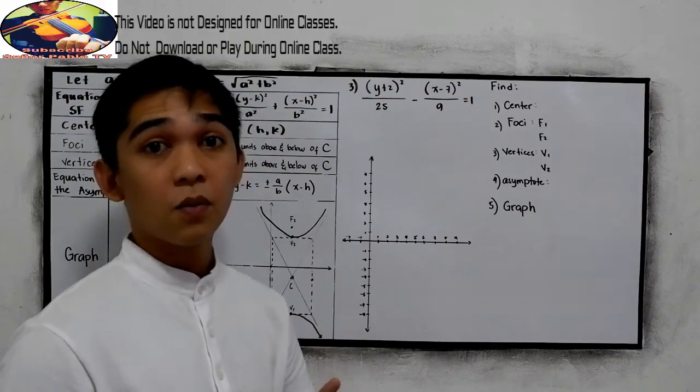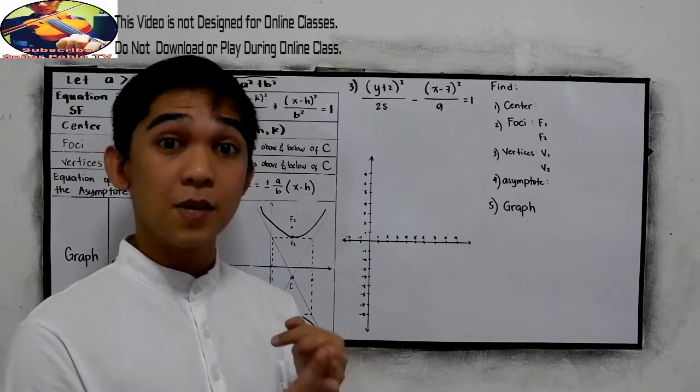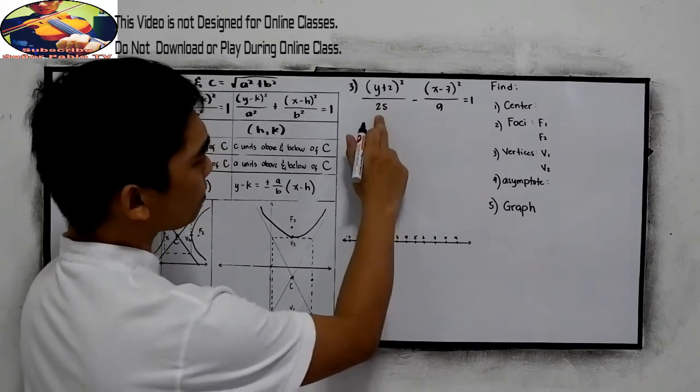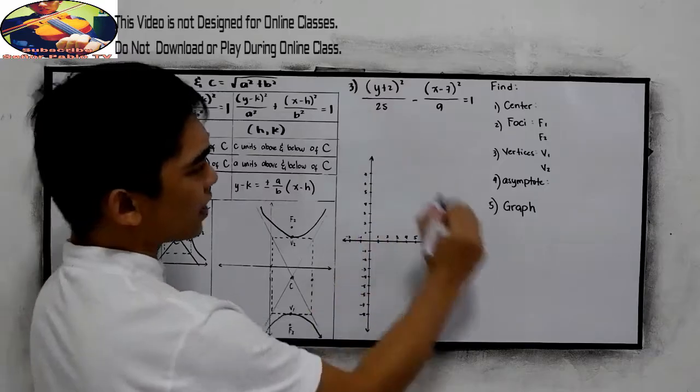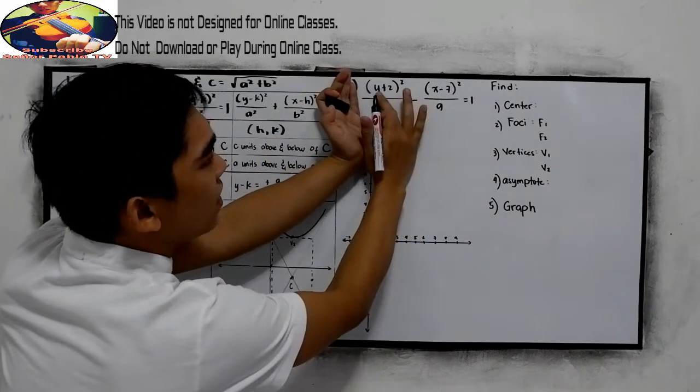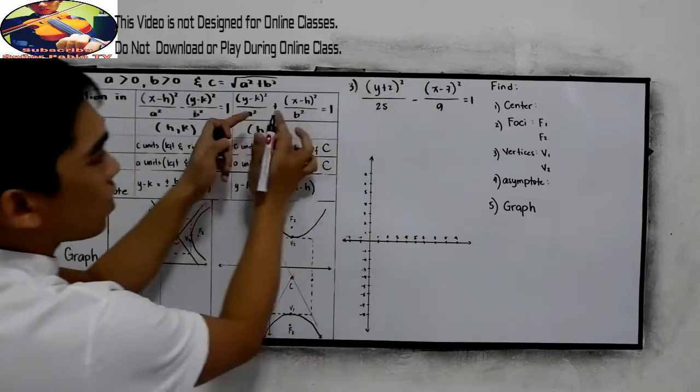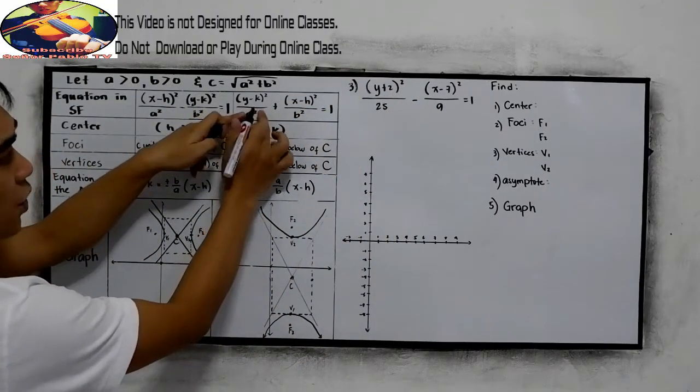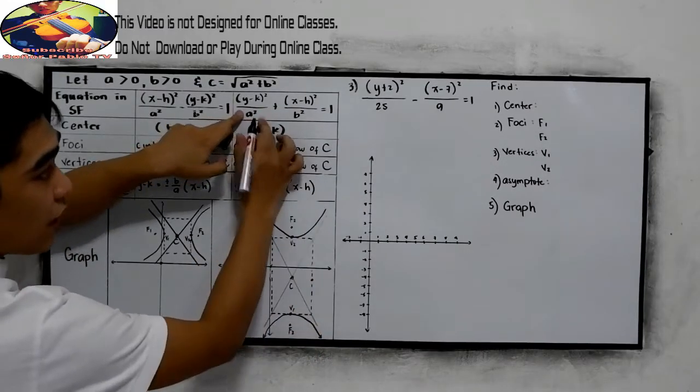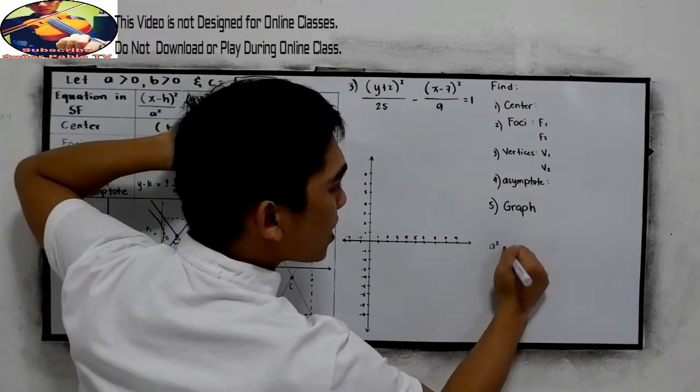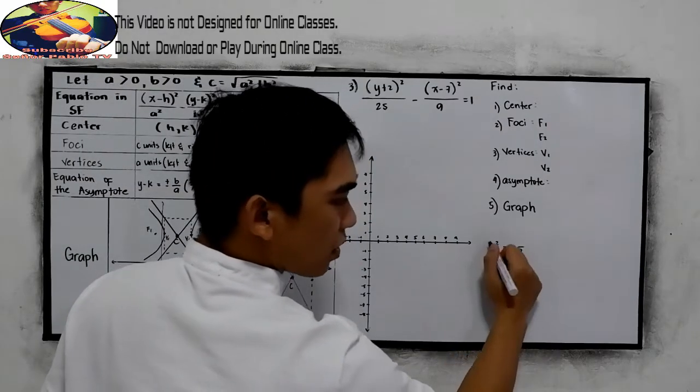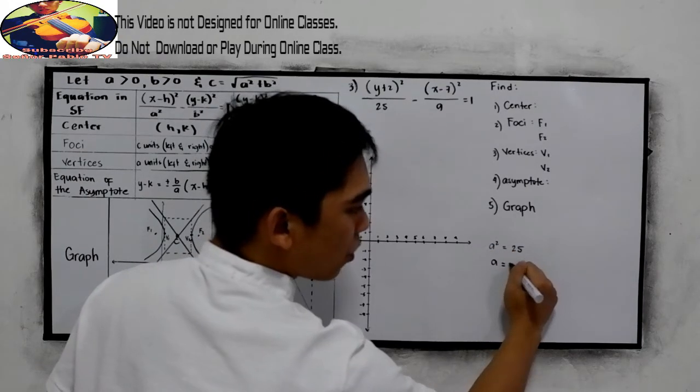So first step, find a, b, and c. So our a here is, it started a given. So y plus 2, so it is in this form. So we are going to expect a graph like this one. So a squared is equal to 25. So extract the square root, our a is equal to 5.